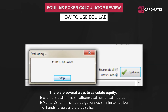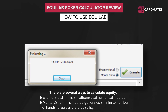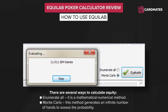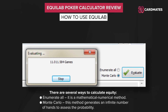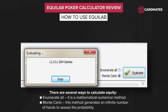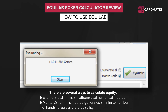There are several ways to calculate equity. First is Enumerate All — a mathematical numerical method. Second is Monte Carlo, which generates an infinite number of hands to assess the probability. Poker players use the first method by default. However, when pressing the Enumerate All button, the following message sometimes appears: 'It is interrupted. Enumerate All equity is inaccurate. Please use Monte Carlo.' In that case, you should use the second method, Monte Carlo.